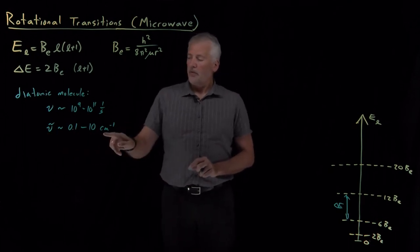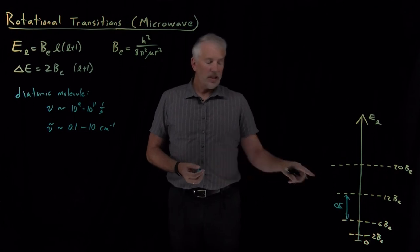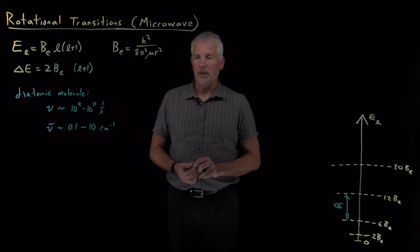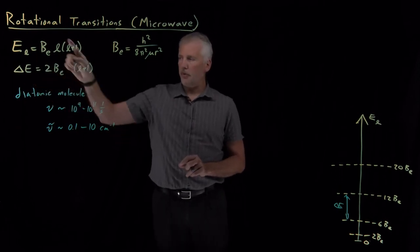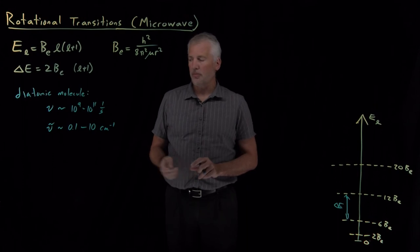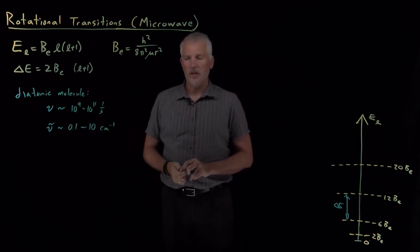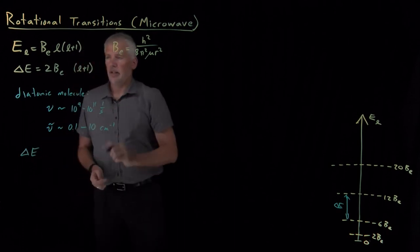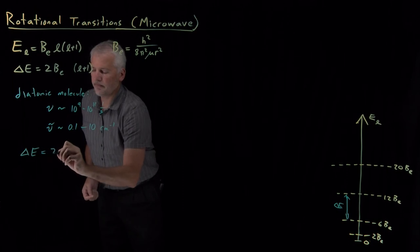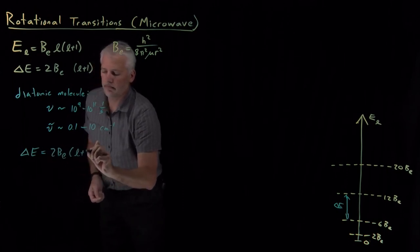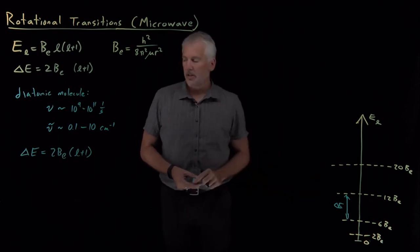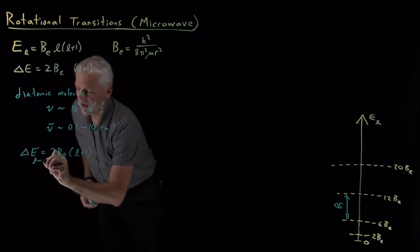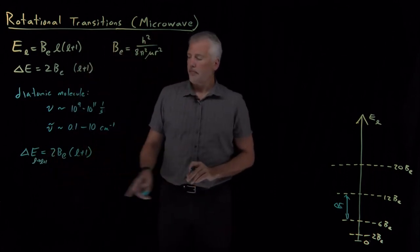Since we're frequently going to be talking about those energies, energy differences in terms of the wave number of the photon that's required to generate that much energy, it's convenient if we rewrite some of these equations in terms of wave numbers rather than in units of energy. For example, if I take this expression, the gap between any two successive states is twice the rotational constant times L plus 1, that's for the L to L plus 1 transition.